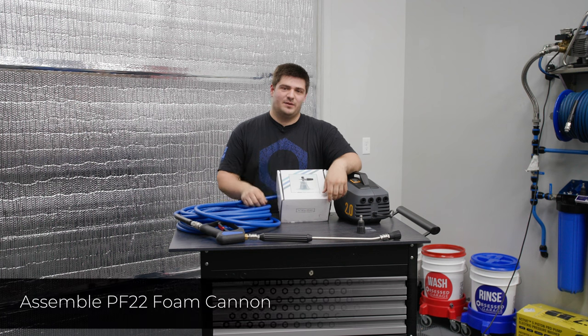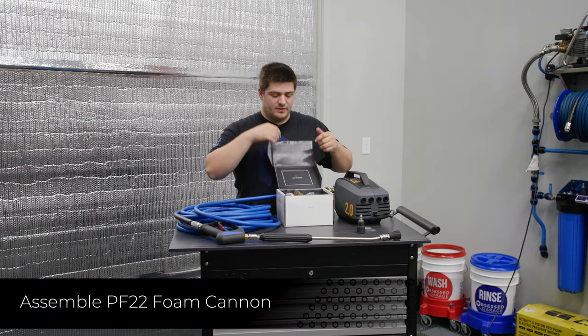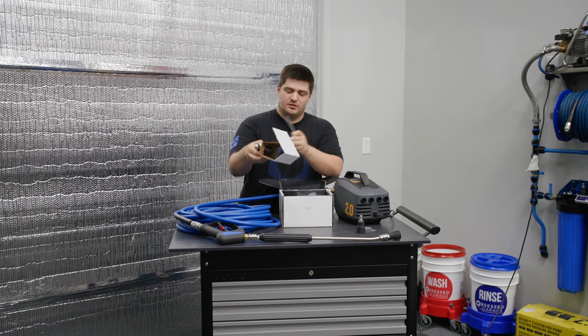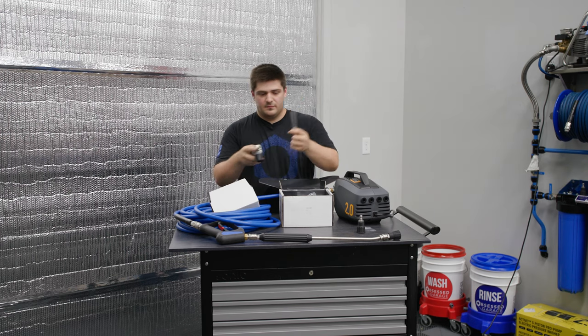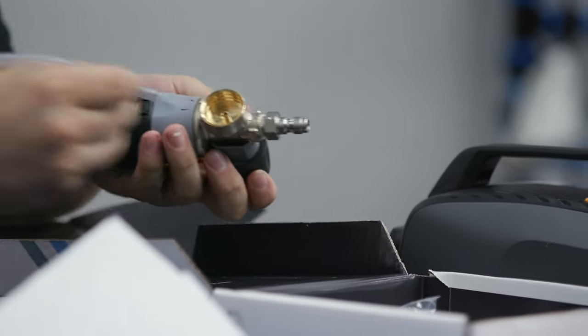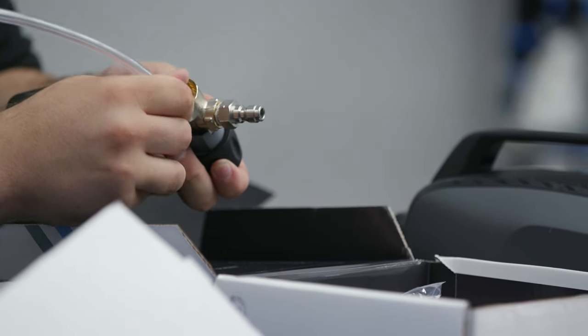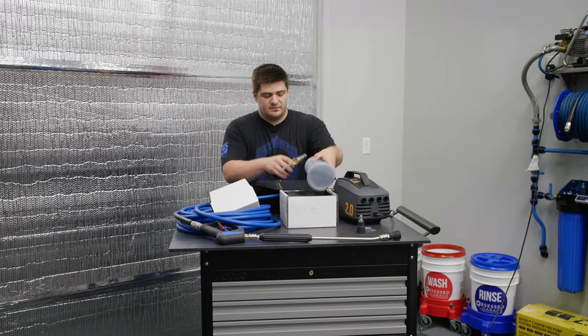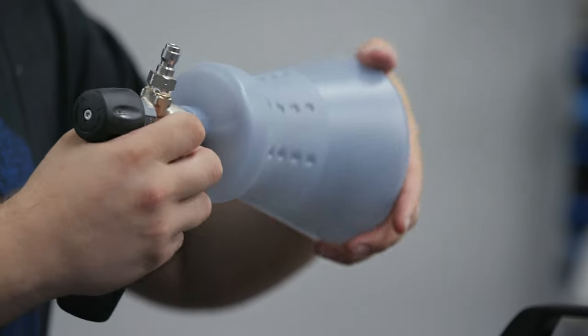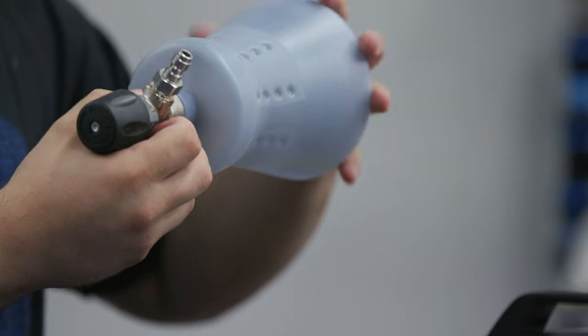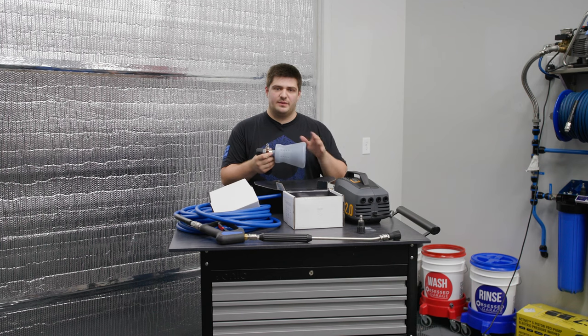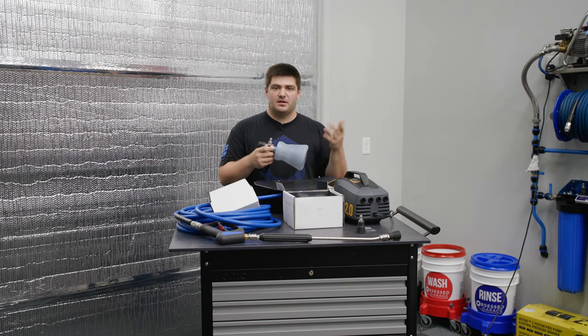Last but not least, we need to assemble our PF-22 foam cannon. It'll come in a few different pieces but it's super simple to put together. We're going to take our pickup tube, we're going to take the housing, plug your pickup tube into the housing. Then we're going to take our bottle out of the box and screw it onto the housing. Always screw the plastic bottle onto the metal housing, not the other way around as you could cross-thread it and damage the bottle itself. If you do have any problems with the bottle cross-threading or anything over the lifespan of it, we do sell replacement bottles on our website.